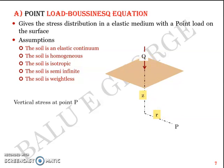The vertical stress at point P is given by σZP, meaning vertical stress in the Z direction at point P. It's given by IB × Q / Z², where capital Q is the point load intensity given in kN, Z is the depth in meters, and IB is a term proposed by Boussinesq.